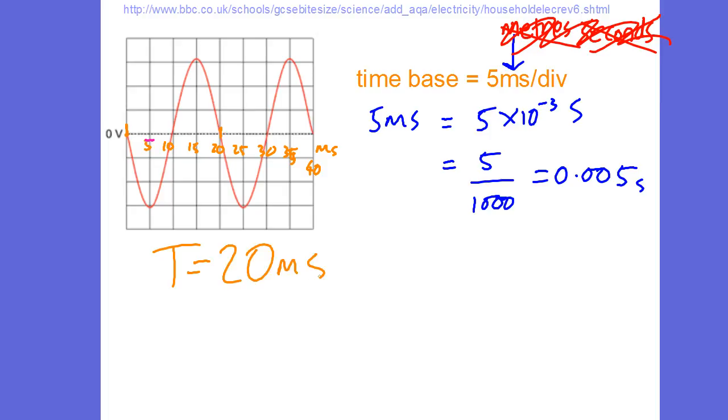Often though, they'll want you to calculate a frequency. So you have to use the relationship between time period and frequency, which is frequency is one over time period. So here that would be one divided by 0.02. So that's what 20 milliseconds is, which is 50 hertz. You can see the time period is the same for the second wave from 20 milliseconds up to 40 milliseconds. Just be careful that you pick a whole wave.